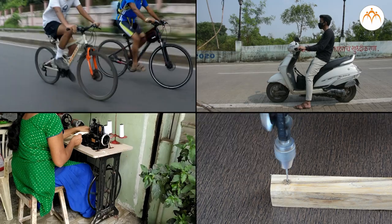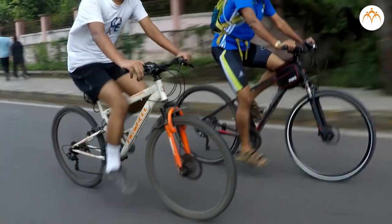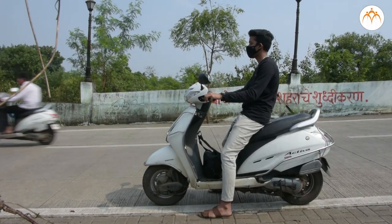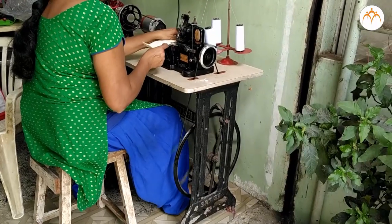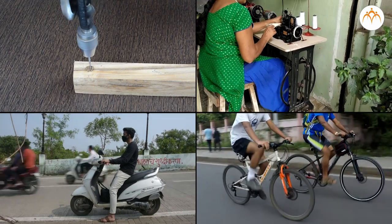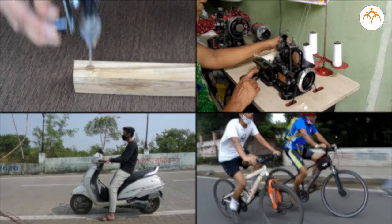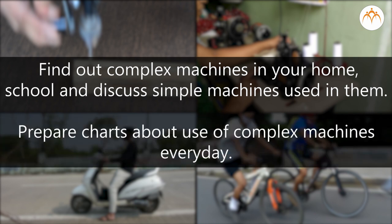The most familiar complex machines are cycle, scooter, mixer grinder, sewing machine, and drill machine. Summary: we cannot live without machines. Find out the complex machines in your home and school, discuss the simple machines used, and prepare charts about the use of complex machines every day.